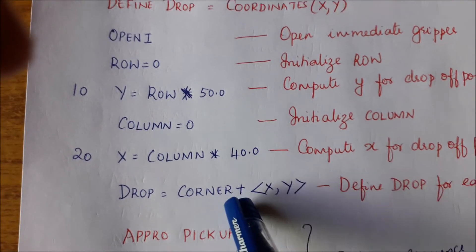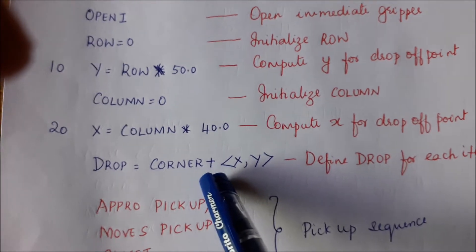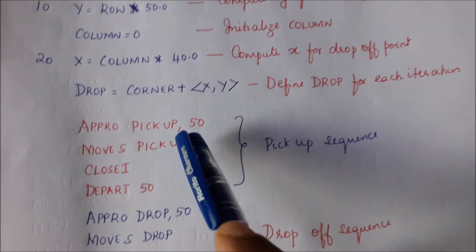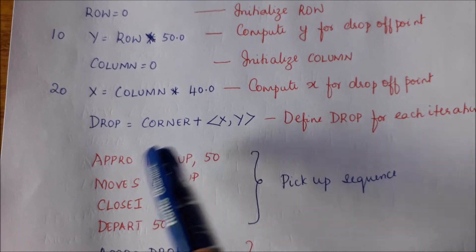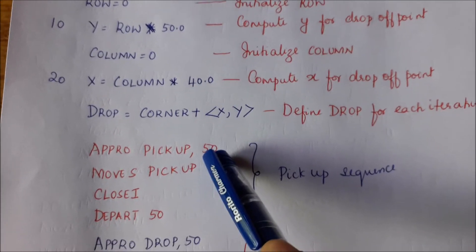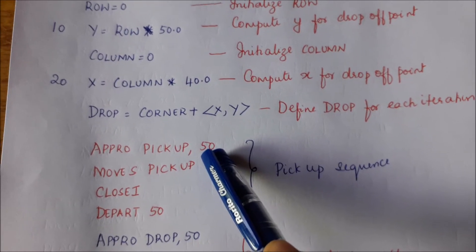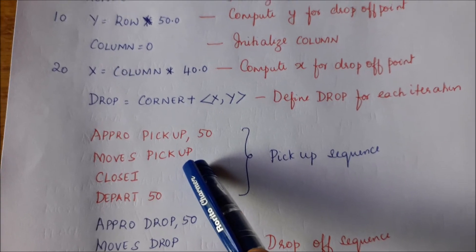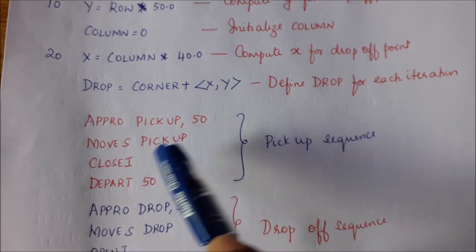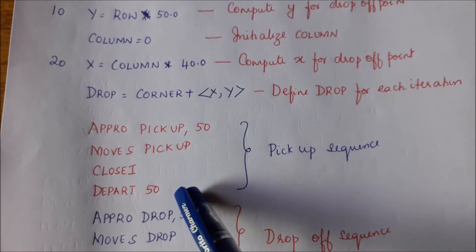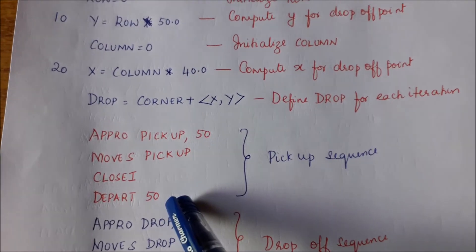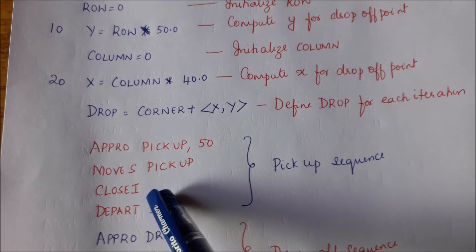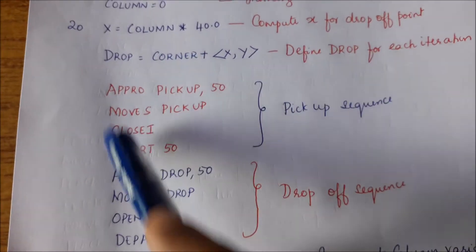Now we must pick up the part. First, approach above the pickup point by 50 mm — do not approach the pickup point directly. Then move in a straight line down to the pickup point where the part is. Close the gripper immediately to grasp the part. After closing, depart by 50 mm upward, going back above the pickup point. This is the complete pick-up sequence: approach above, move down, close gripper, depart upward.